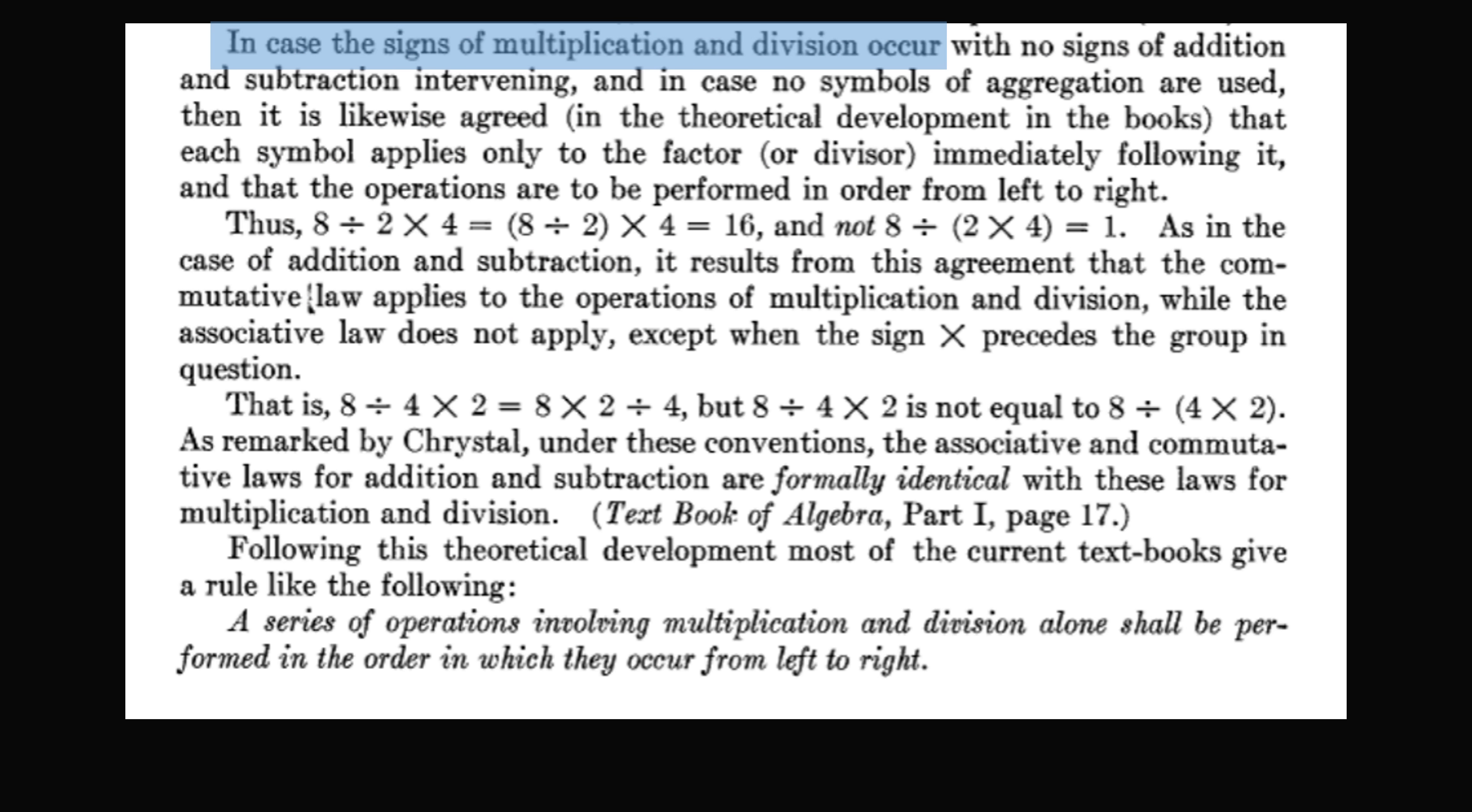In case the signs of multiplication and division occur, the operations are to be performed in the order from left to right. In fact, this very question appears in the paper. 8 divided by 2 multiplied by 4. You need to evaluate 8 divided by 2 and then multiply it by 4 to get 16. And this is not 8 divided by the group term 2 multiplied by 4. That would be equal to 1. A series of operations involving multiplication and division alone shall be performed in the order in which they occur from left to right. So this should settle matters forever.